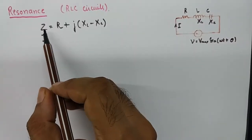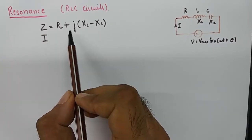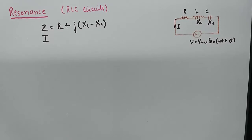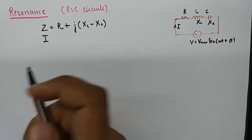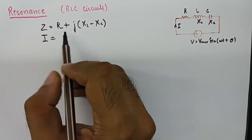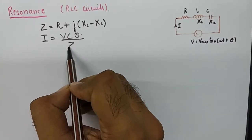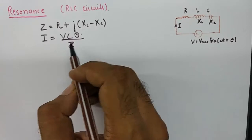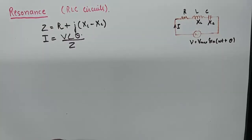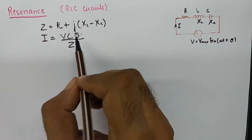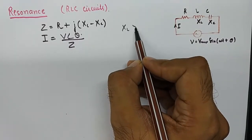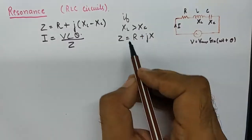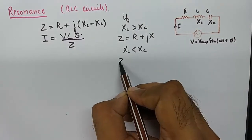Because of these reactances, our impedance becomes a complex quantity. Our impedance is equivalent to R plus j(XL minus XC). If the inductive reactance is greater than the capacitive reactance, Z will be equivalent to R plus jX. If XL is less than XC, then Z will be R minus jX.